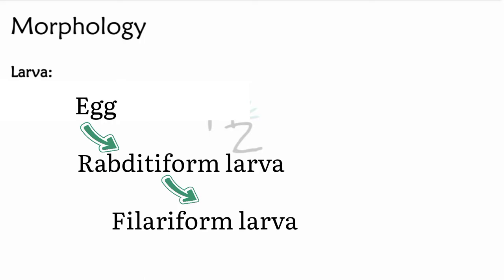Larva: when the egg is released in feces, it gets embryonated in warm, moist soil. Larva has two forms: the first is the rhabditiform larva and the second is the filariform larva. The filariform larva from moist soil penetrates the skin, usually the feet or the legs, and is responsible for causing infection. How it does that, we'll study in the life cycle. Here you can visualize the larva inside the egg.